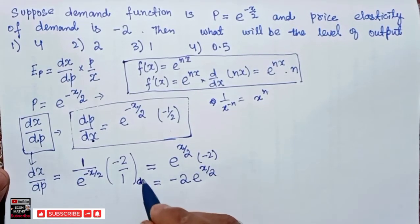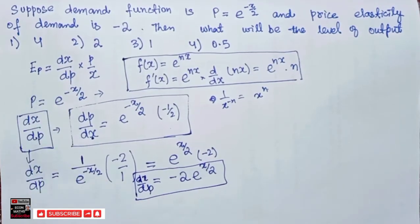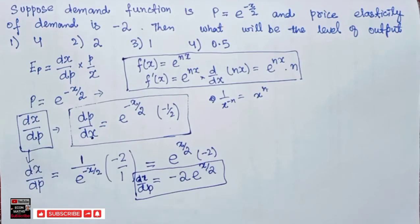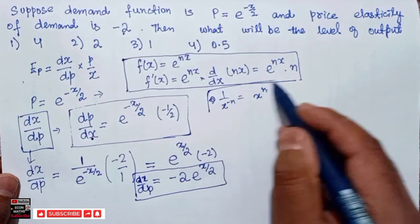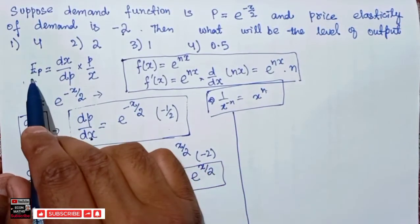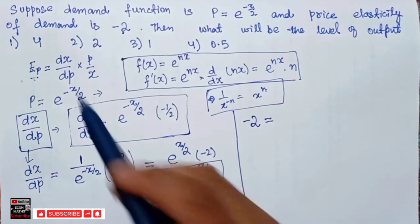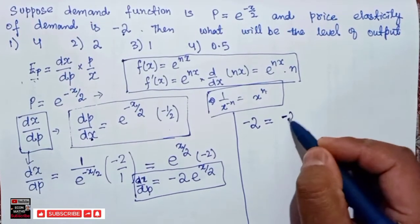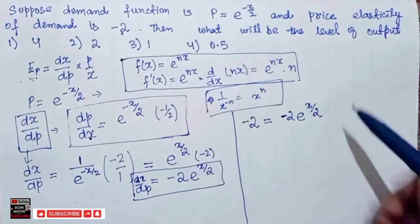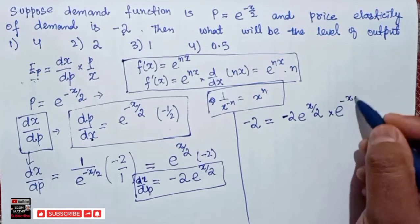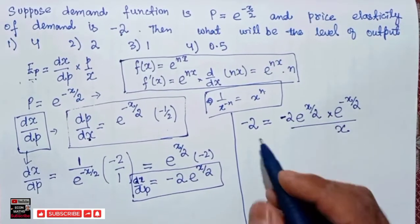Now we use the elasticity formula. We are given price elasticity of demand equals minus 2. Substituting: minus 2 equals dx/dp times p divided by x. We substitute dx/dp as minus 2 e to the power x divided by 2, and p as e to the power minus x divided by 2, then divide by x. Since the bases are the same, we can add the exponents: x divided by 2 plus minus x divided by 2.